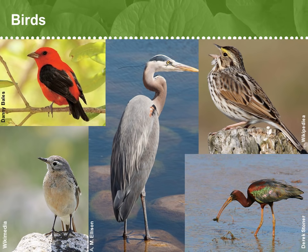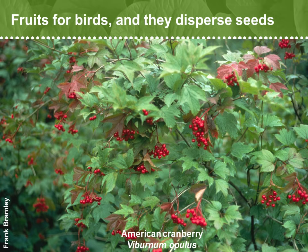But enough about bugs already. How about some of those bigger things we also care about, such as birds? Like ants, birds also transport seeds because they feed hungrily on fruits. We can plant native species, such as blueberries or American cranberry, Viburnum opulus, pictured here, and many others that provide essential fodder to birds, especially in late summer as they're provisioning for their long migrations.